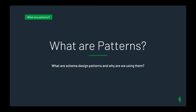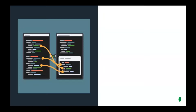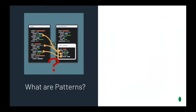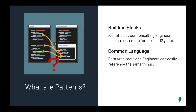We can make a parallel between MongoDB schema design patterns and the software design patterns described by the Gang of Four — the classic software engineering book written by Eric Gamma and his friends, drawing on many years of experience designing software architectures. Just as software design patterns are not full solutions to problems, our schema design patterns are also not full solutions. They are building blocks identified by consulting engineers like Justin over many years. They act as a common language — when someone uses a pattern name, there should be no ambiguity about the intent of the design.